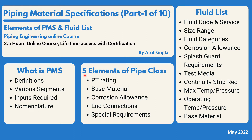We'll look into the five elements of pipe classes. The first is PT rating — we'll look in detail at what PT rating is, how it is defined, and how it relates to the PMS. Then base material — we'll look into the basic things with respect to base material so we can understand what kind of materials are present in any PMS.